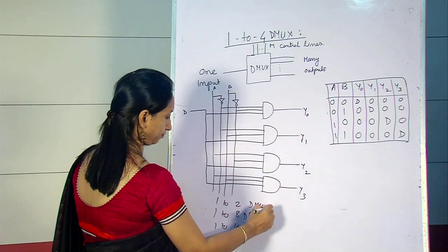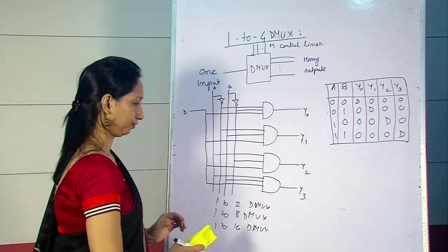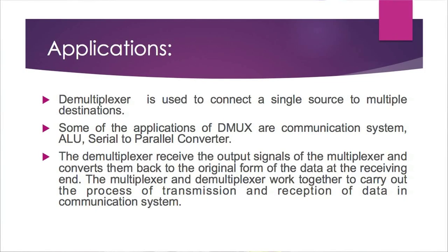Demultiplexer is used to connect a single source to multiple destinations. Some applications of demultiplexer are communication systems, arithmetic logic units, and serial-to-parallel converters. The demultiplexer receives the output signals and converts them back to the original form of the data at the receiver end. Multiplexer and demultiplexer work together to carry out the process of transmission and reception of data in communication systems.